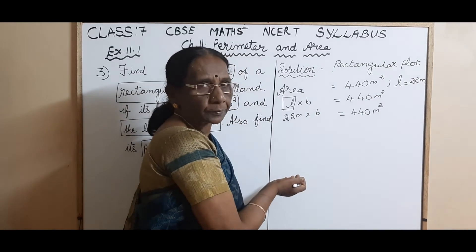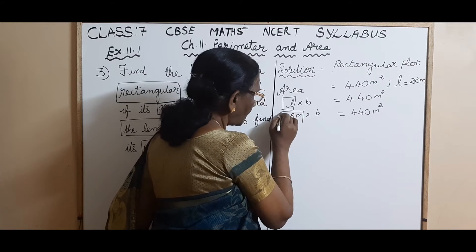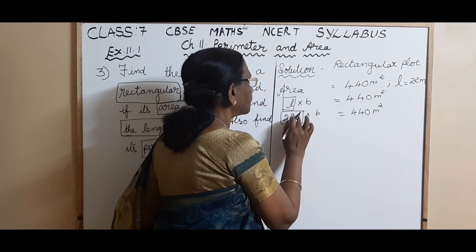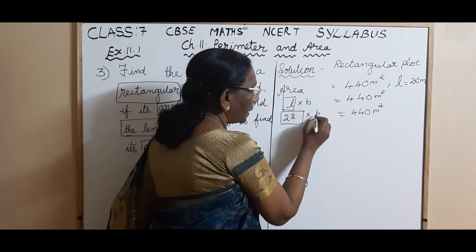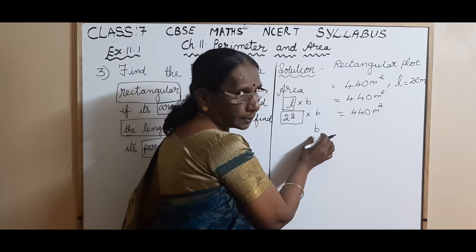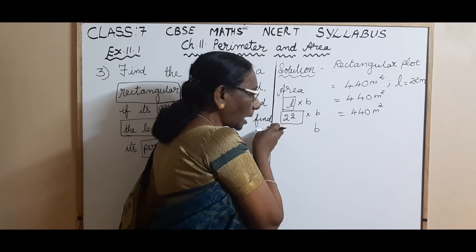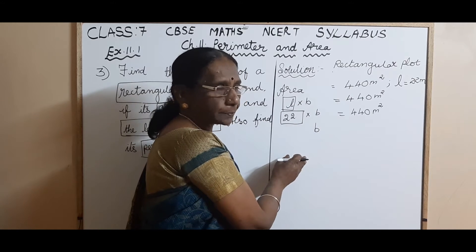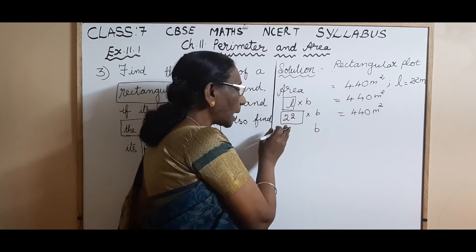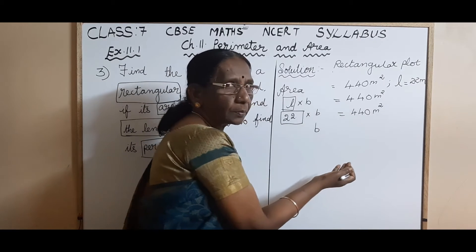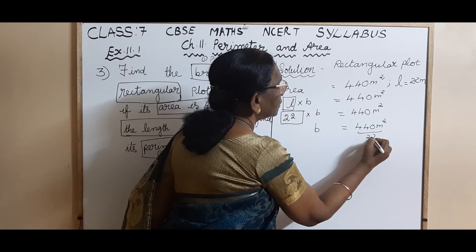Now it is in the form of a simple equation. We have 22 × B = 440. We want only B, so we have to transpose 22 to the right-hand side. Since it is connected with multiplication, when transposing from LHS to RHS, it becomes division. So breadth = 440 meter square ÷ 22 meter.